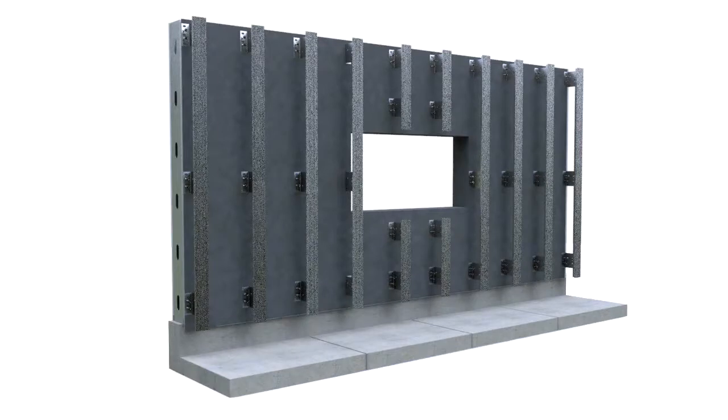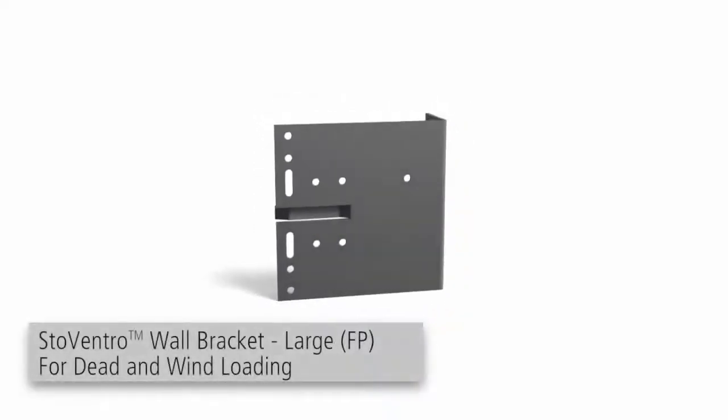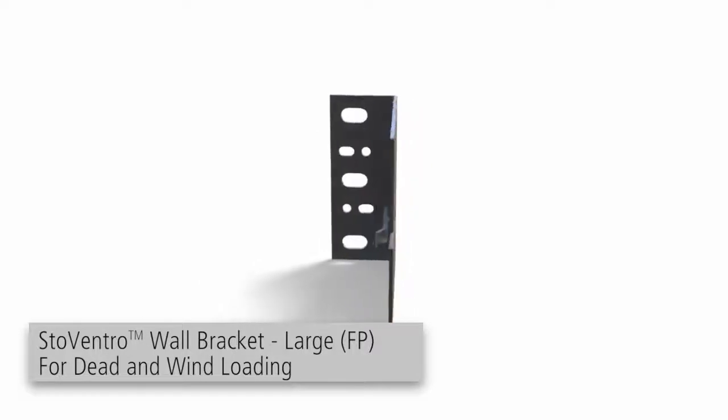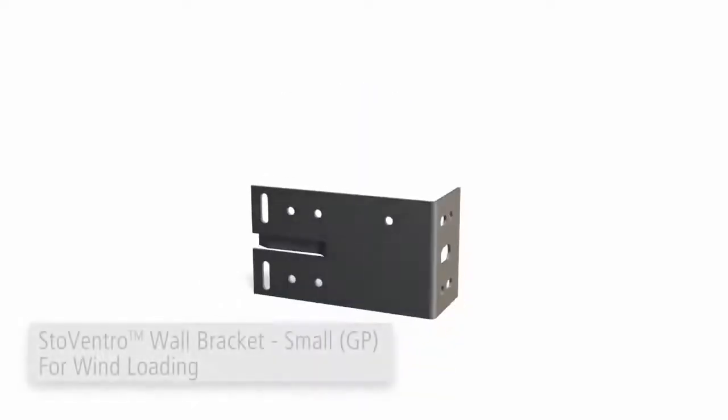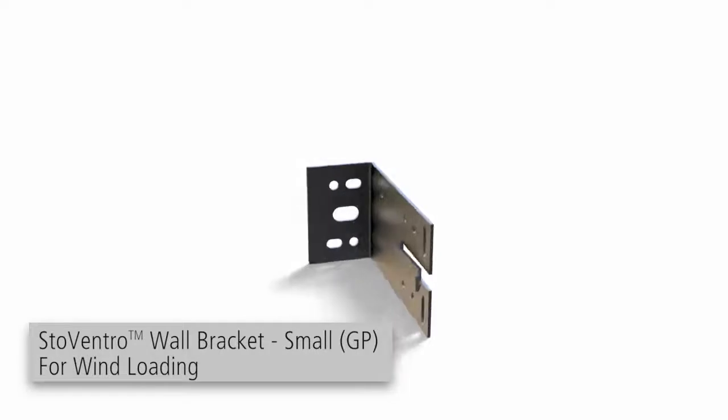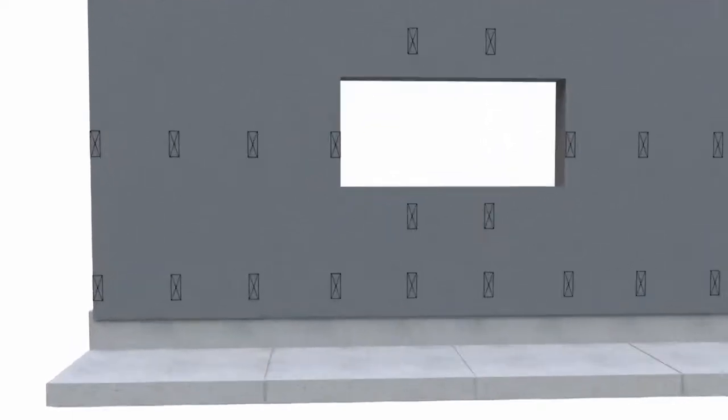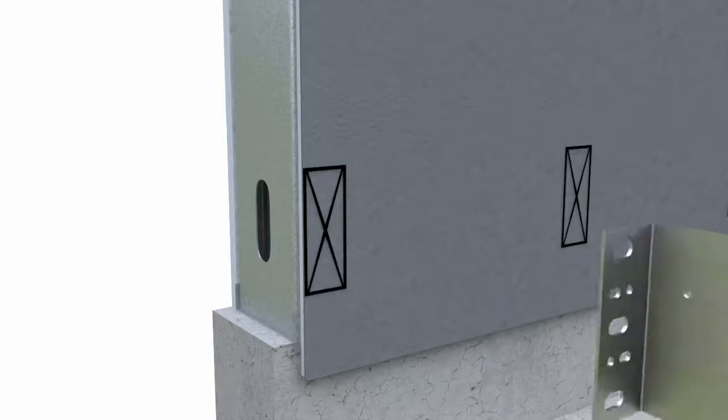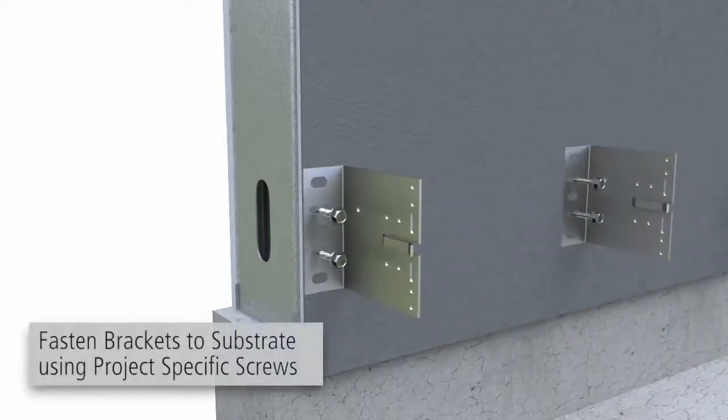For this installation, we're using large stainless steel brackets attached to a steel stud framed wall. Brackets come in two sizes, the larger FP wall bracket and the smaller GP wall bracket. Using the elevation benchmark and project-specific drawings, mark the installation locations of the wall brackets and vertical T-profiles on the substrate, and fasten the brackets to the substrate using project-specific screws, verifying the brackets are plumb.